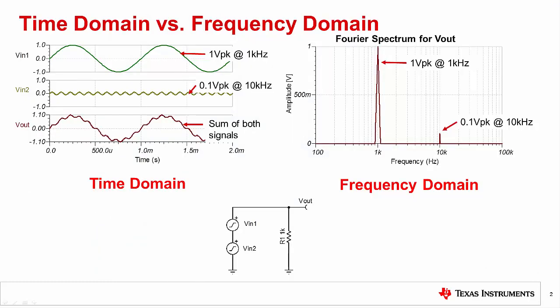Here we introduce the concept of time domain and frequency domain. Time domain shows the amplitude of signals versus time. In the time domain example, we are creating an unusual wave shape by adding two sine waves together: a 1 volt peak sine wave at 1 kilohertz and a 0.1 volt peak waveform at 10 kilohertz. We will look at this combined waveform in the frequency domain.